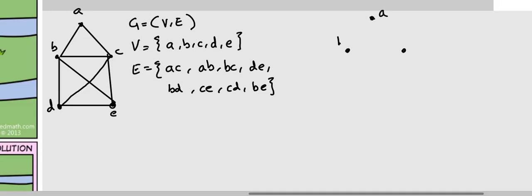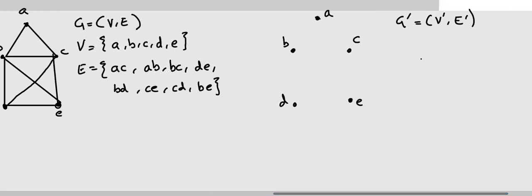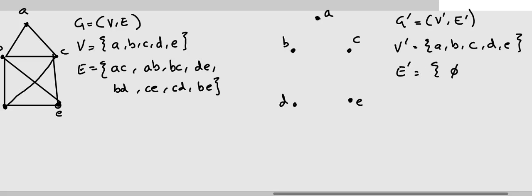We can also consider another empty graph comprising of the same object. The idea is that we are going to slowly go through the edges identified in graph G and bring them across to a new graph called G-bar, comprising the set V-bar and E-bar. V-bar at the moment consists of A, B, C, D, and E, and E-bar is initially a null graph with no edges.